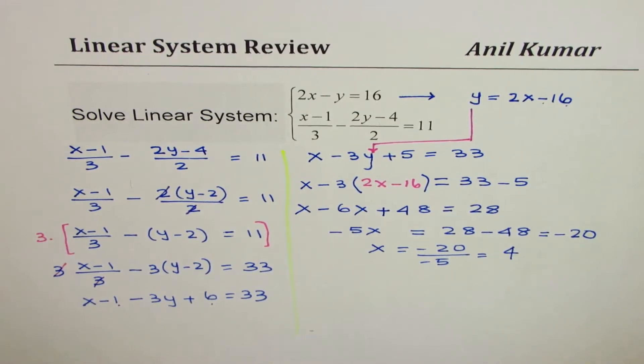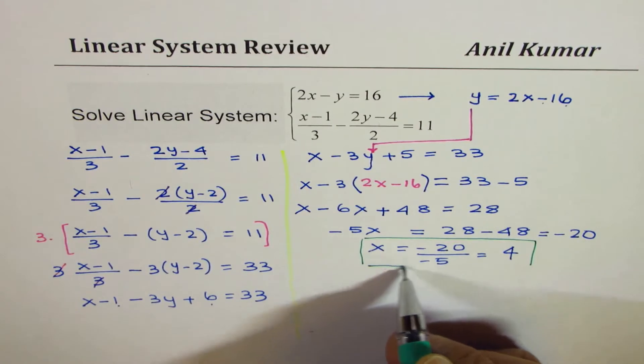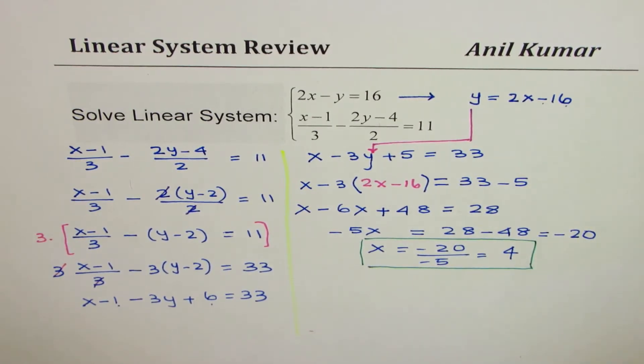So we got one part of it. We got the x coordinate of the line. These are two different lines. They will intersect at a point, and that is their solution.